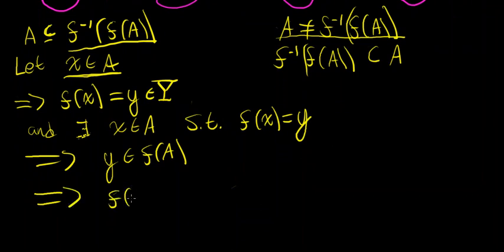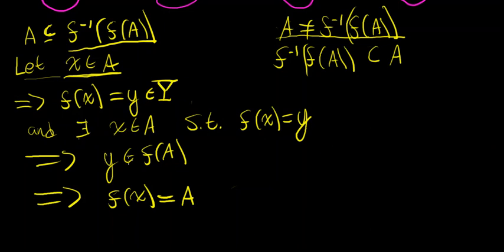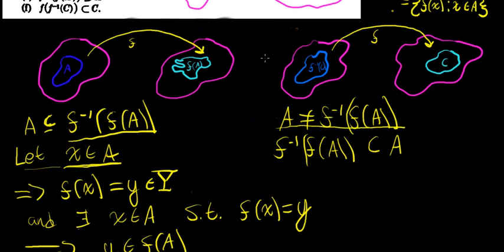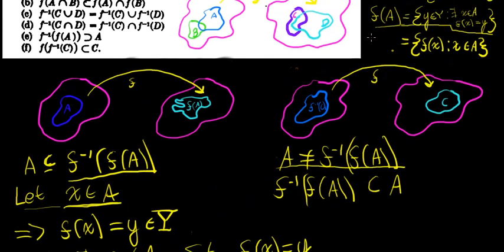Since y = f(x), this implies f(x) is in f(A). To restate: if f(x) = y, and we know x is in A, then there exists an x in A — that was our original hypothesis — such that f(x) = y. That immediately implies y is in f(A). And since y = f(x), f(x) is in f(A). This all hinges on the definition of the image of a set under f.